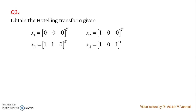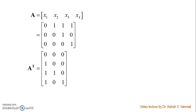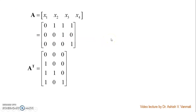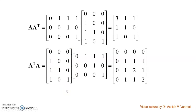First, we construct image matrix A composed of vectors x1, x2, x3, and x4. In the problem, the row vectors are given with the transpose notation, meaning each is actually a column vector. When you arrange them as columns, you get A as: [0,1,1,1 / 0,0,0,0 / 0,0,1,1] — and this is the corresponding A transpose.